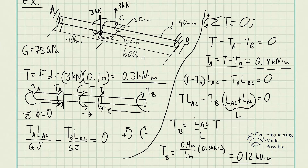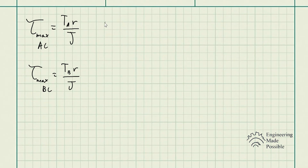Once we have the torques, we use the shear stress due to torsion equation: tau equals T times the radius divided by the polar moment of inertia. For segment AC, we use T_A; for segment CB, we use T_B. The maximum shear stress in AC is calculated using T_A times radius over J, and in BC using T_B times radius over J.